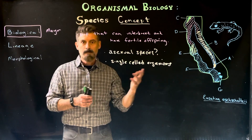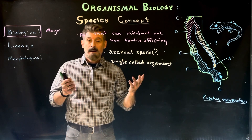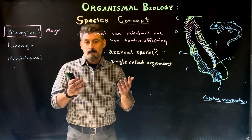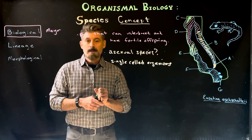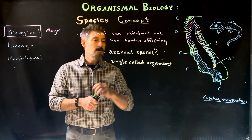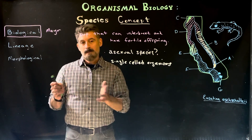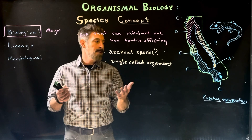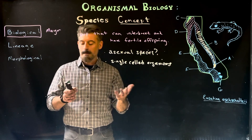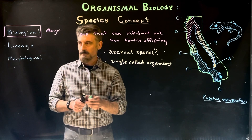Generally, people tend to be focused on animals, especially ones like humans, because people tend to look at themselves. And so the biological species concept works for us, but it doesn't really work for the rest of life. There's a lot of debate about other sorts of ways of defining species.